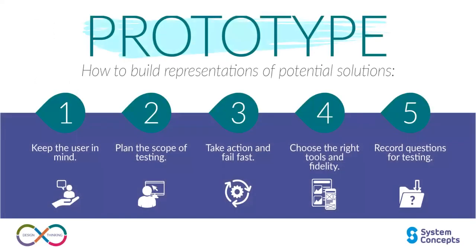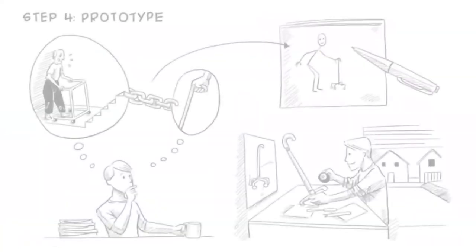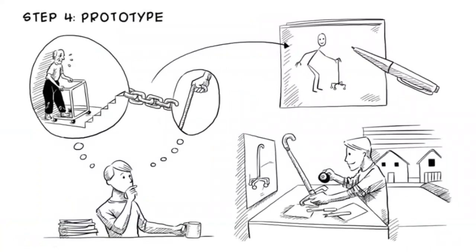The next stage is prototyping — building a quick and simple solution. Once you have promising ideas, it's time to create prototypes: rough, scaled-down versions of your potential solutions. These can be sketches, models, or digital mock-ups. The goal is to quickly and inexpensively bring your ideas to life to gather feedback and refine your concepts. In this stage, designers create tangible representations of selected ideas, allowing the team to turn abstract concepts into something concrete that can be tested and iterated upon.